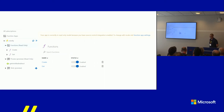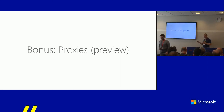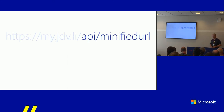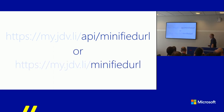Since there's still some time left, I have bonus slides about something still in preview called proxies. Proxies enable you to redirect a request from one endpoint to a different endpoint. For a URL shortener service this makes a lot of sense, because all routes are prefixed with 'api', which doesn't make sense for a URL shortener. Proxies allow you to strip away the 'api' prefix and just use the actual slug you want to access.